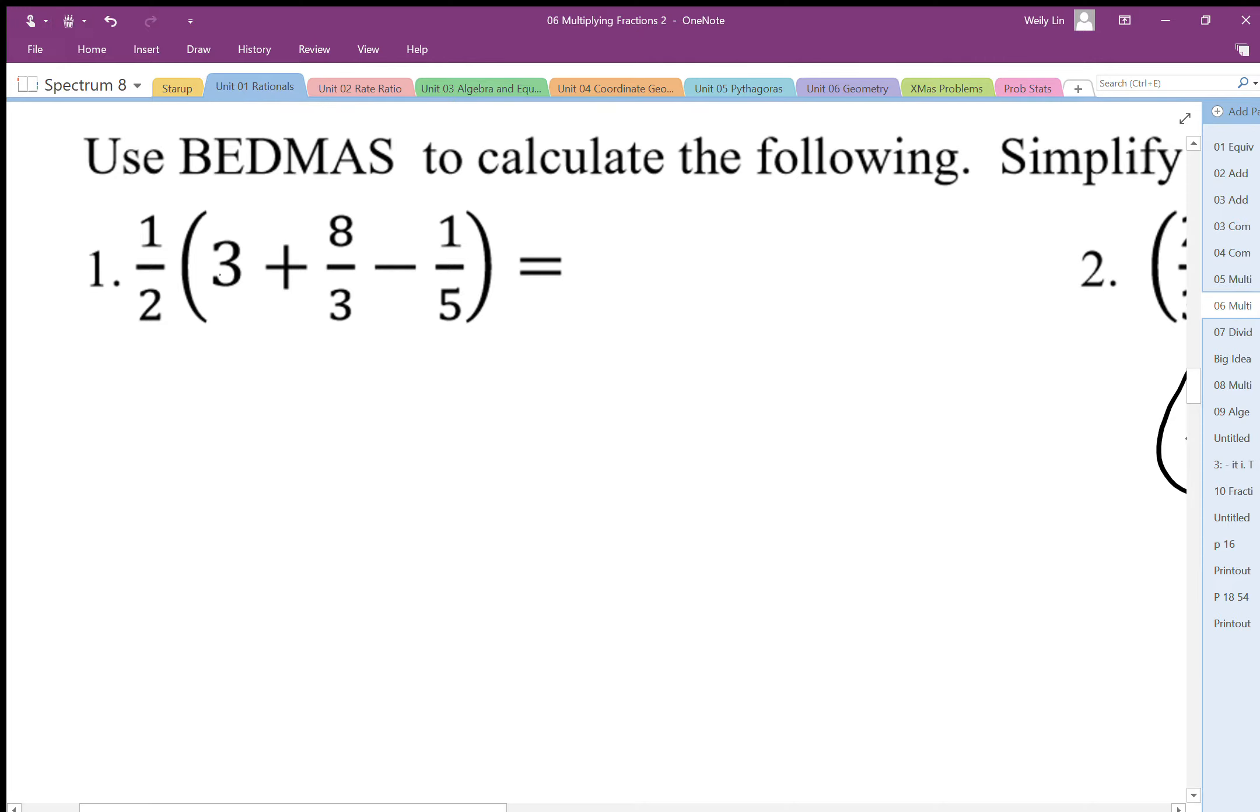I'm going to rewrite this with the 3 as a fraction. So this is going to be 3 over 1 plus 8 over 3 minus 1 over 5. We need a common denominator, and the common denominator here is going to work out to be 15.